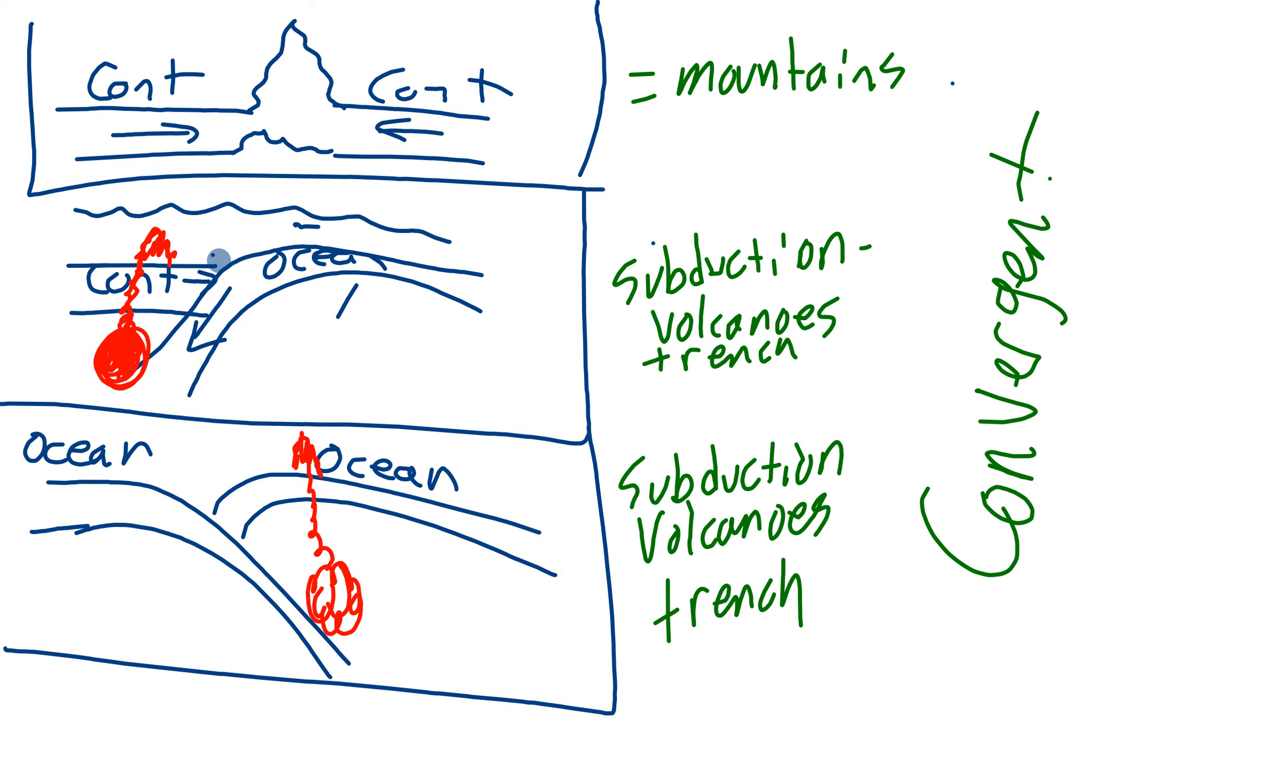If you have two oceanic crusts converging, you're still going to get the subduction, the trench, and the volcanoes. The trench is going to be right here.